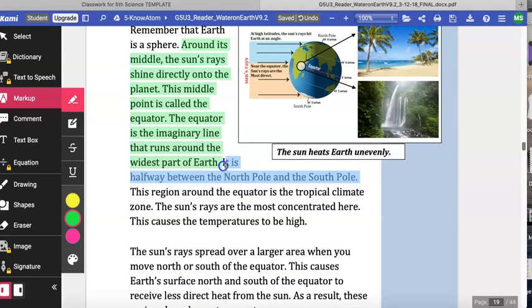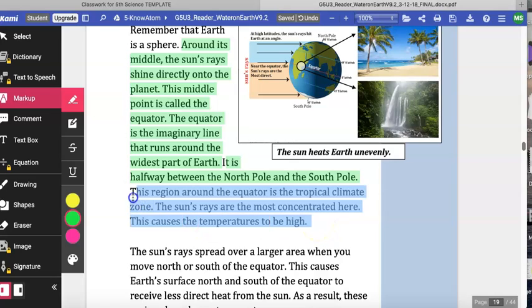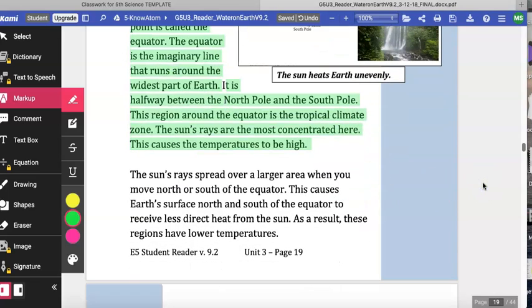This region around the equator is the tropical climate zone. The sun's rays are the most concentrated here, which causes temperatures to be high. The sun's rays spread out over a larger area when you move north or south of the equator. This causes Earth's surface north and south of the equator to receive less direct heat from the sun. As a result, these regions have lower temperatures.